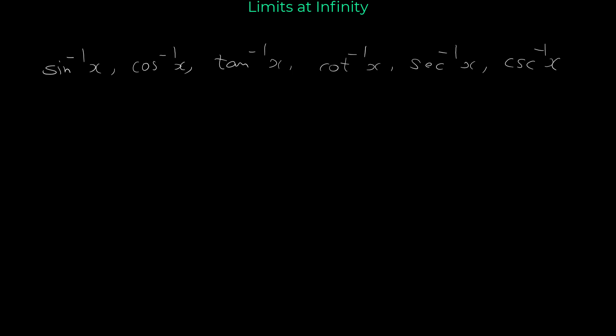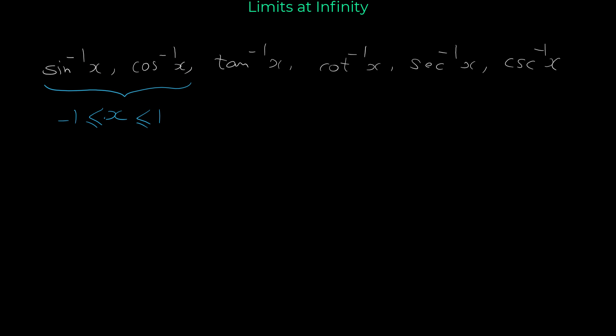Hello and welcome. In this video we want to talk about limits at infinity for inverse trigonometric functions. Here you can see a list: sine inverse, cosine inverse, tangent inverse, cotangent inverse, secant inverse, and cosecant inverse. For sine inverse and cosine inverse, we don't have limits at infinity because their domain is limited between negative one and one, so x cannot approach infinity or negative infinity.